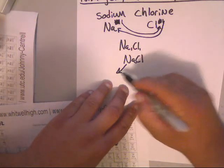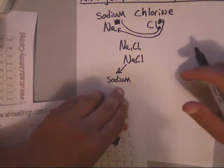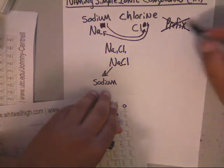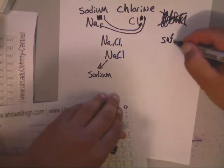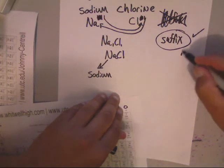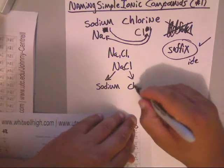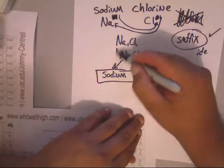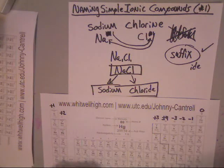Now let's show you how to name this. You just name the metal first — it's just sodium. There are no prefixes like mono, di, or tri — prefixes are never used for ionic compounds. The suffix '-ide' is used, so chlorine becomes chloride. The name of this compound is sodium chloride and its formula is NaCl. I'll cover more in the next video.